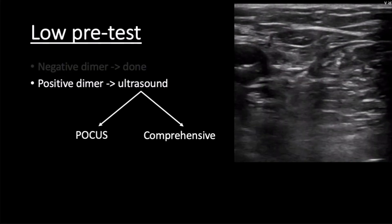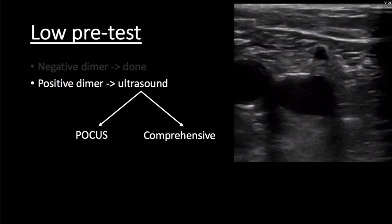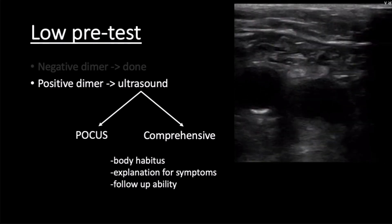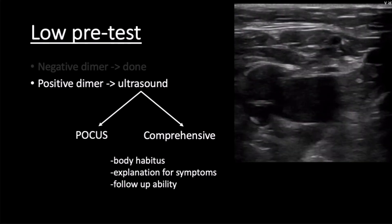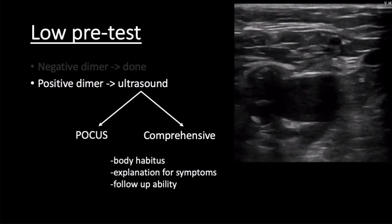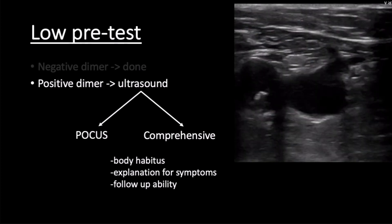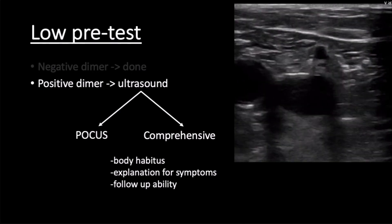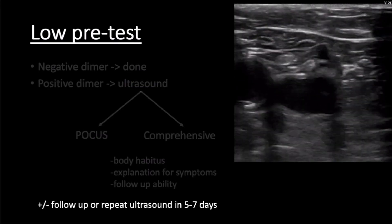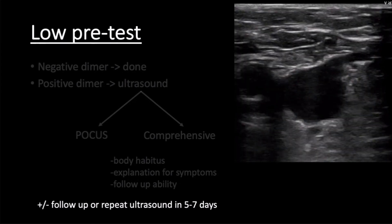If a D-dimer is obtained and it's positive and ultrasound is required, the decision for a comprehensive radiology study versus my bedside study tends to be patient-specific, based upon multiple factors including body habitus, explanation for symptomatology, and ability to obtain follow-up. I think it also depends on whether your radiology-performed studies are full-leg or just proximal, because I feel that we are just as good at performing proximal studies. I feel the majority of my DVT rule-outs present non-business hours where the availability for a comprehensive scan is not universally present. Depending on the adequacy of my views and overall gestalt, my guidance for follow-up and consideration of repeat ultrasound in 5-7 days is patient-specific.